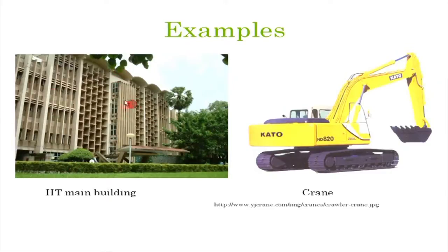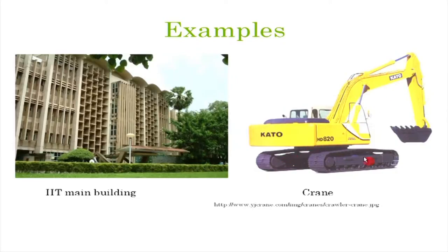A building has a deep foundation that acts as a support. We design it so components typically do not change their distances from each other — a room that is almost a cube remains almost a cube. Another example is cranes at construction sites: even though a crane moves via hydraulic cylinders, there are many instances when it must remain stable. At that instant, we can say the crane is a rigid body and discuss its equilibrium.